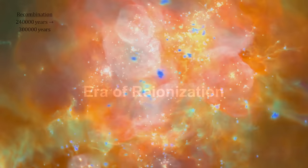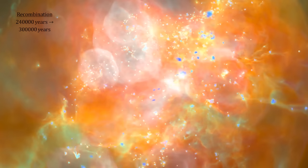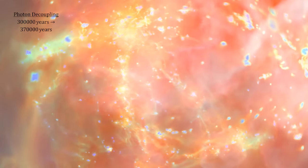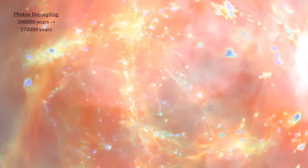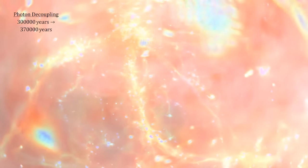In the How Old Is It video book, we covered the early stages of the universe through the Dark Ages following photon decoupling. It is estimated that the Dark Ages extended from 370,000 to 150 million years after the Big Bang.